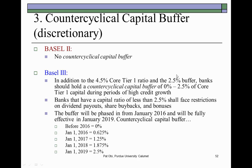In the third standard, it prescribes a discretionary counter-cyclical capital buffer. Under Basel II there was none. Under Basel III, it says that in addition to the 4.5% core Tier I capital ratio in the first standard and the 2.5% buffer in the second standard, banks should also hold a counter-cyclical capital buffer of up to 2.5% of core Tier I capital during periods of high credit growth.